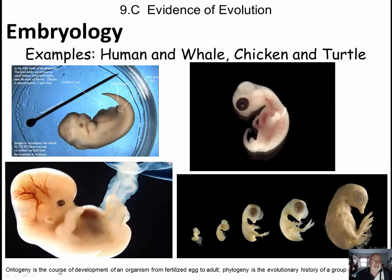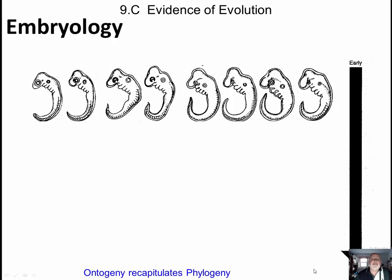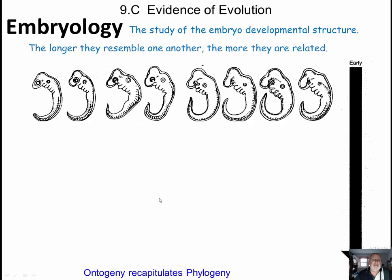Ontogeny is the actual course of development for an organism from fertilized egg to an adult. Phylogeny is actually the evolutionary history. So you can actually say that ontogeny recapitulates phylogeny — when we see the development of an organism, we can tell something about its evolutionary history. Embryology is the study of embryos and how they develop with structure and function. The longer one embryo resembles another, the more related they are. Right here you can see they have eyes, gill slits, and tails.